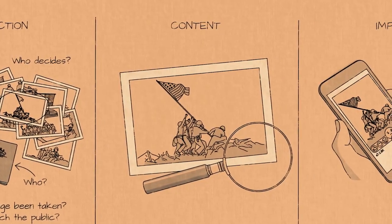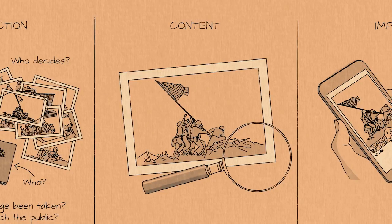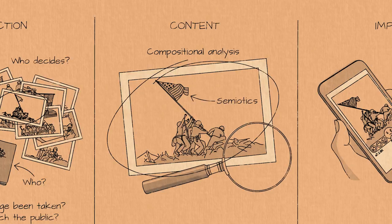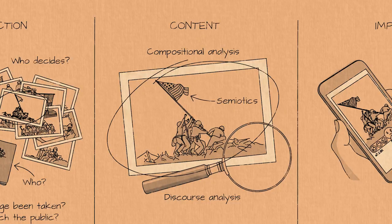After completing the first step, we move on to the content of the image — that's the second step. Here we can find three different ways of doing it. One is a simple compositional analysis: carefully looking at an image, describing the content, the contours, who we can see, the colors, et cetera. The second would be a semiotic analysis — looking at what kinds of symbols are in there, what they mean culturally and politically. And the third would be a discourse analysis, where we look at power relationships, who is depicted, who is not, and what that means for politics.